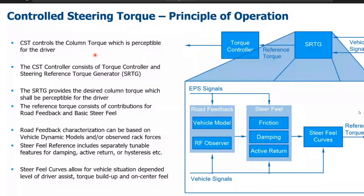The CST controller consists of a torque controller and a steering reference torque generator. The steering reference torque generator provides the desired column torque — the reference column torque — which shall be perceptible for the driver. The reference torque can consist of contributors for road feedback and basic steer feel.